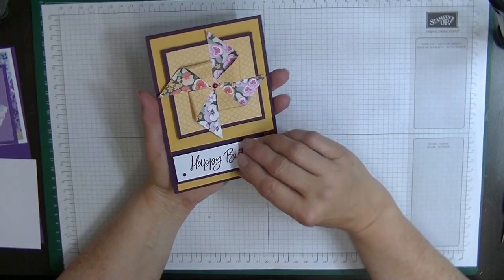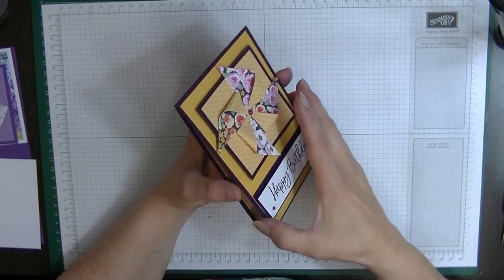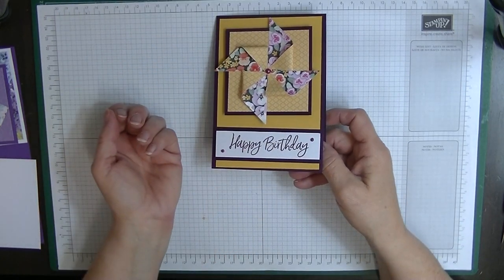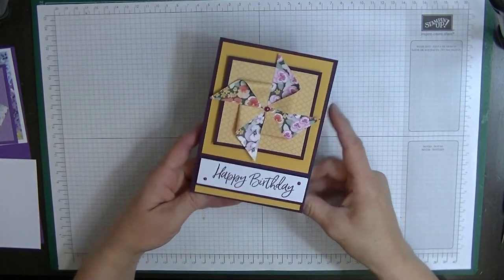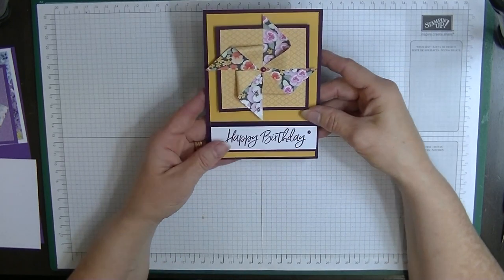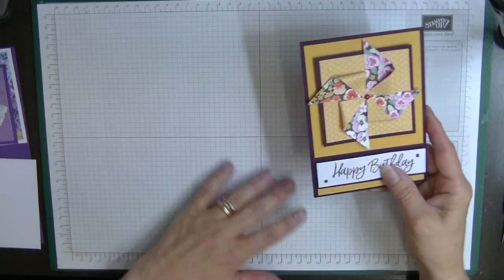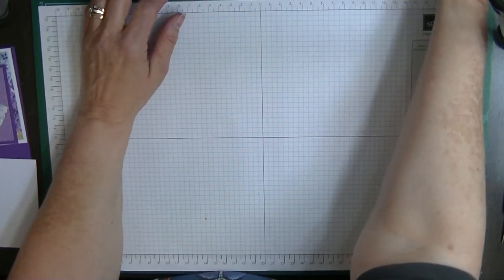This is the card I made for my color creation blog in Blackberry Bliss. I'm going to make another one and everything I'm using today is actually retired. I'm also making an open sideways one, not a top fold.